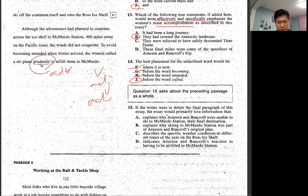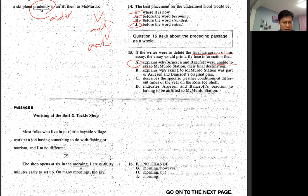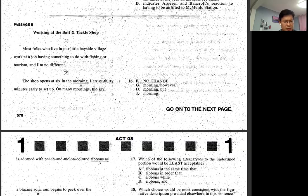The writer will delete the final paragraph. So final paragraph sort of gives us whatever happened there that the wind did not cooperate to avoid becoming stranded. The woman called Ski Plain so that they couldn't accomplish all the way. The next one.